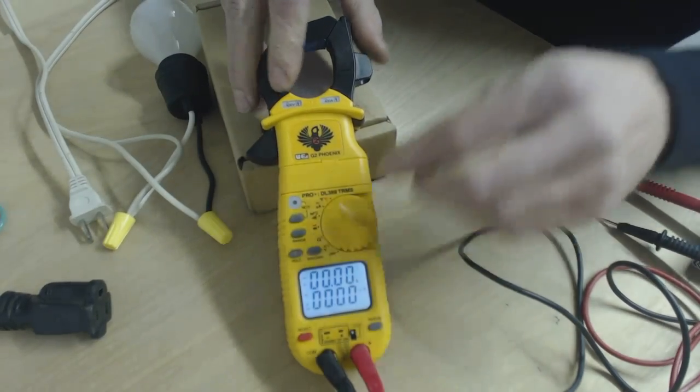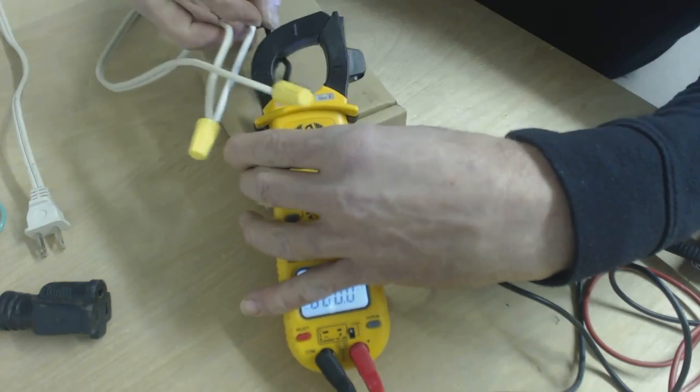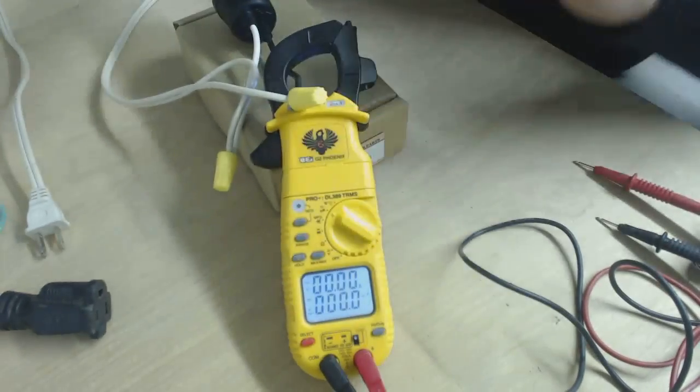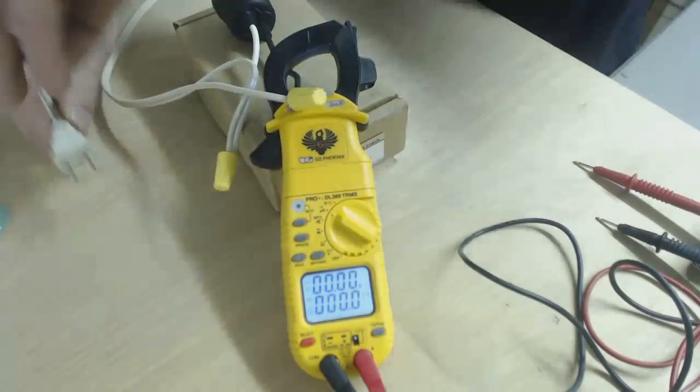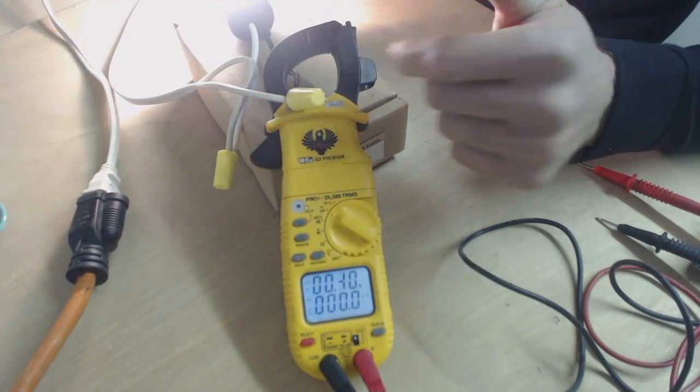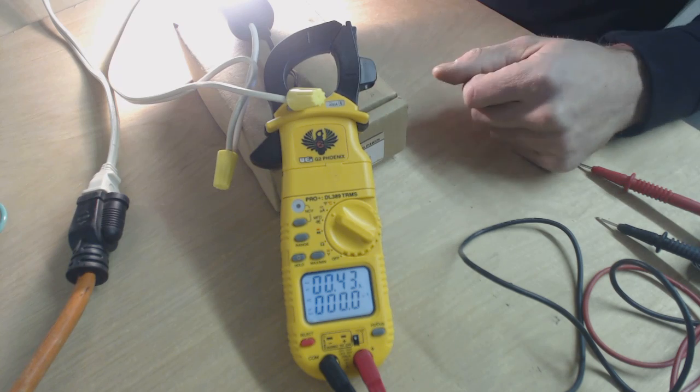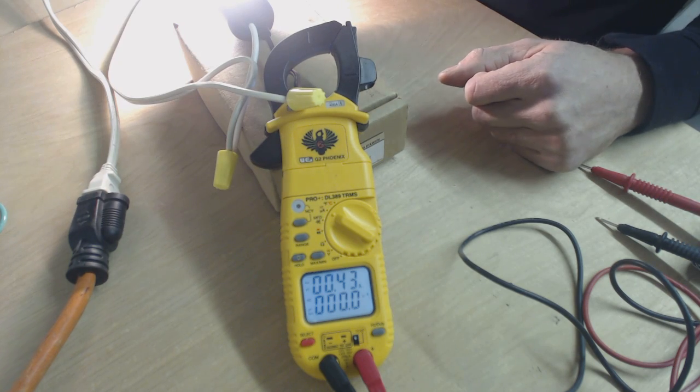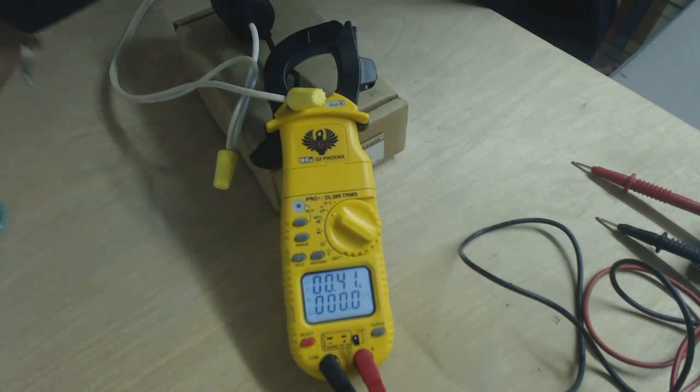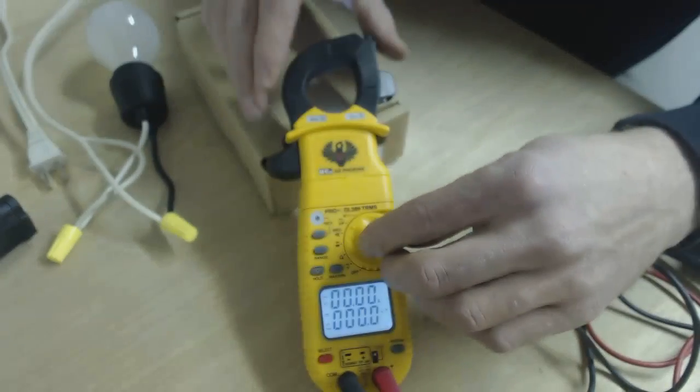Now we're going to turn it to A for amps. You're going to go ahead and put it around the hot wire. You can put it around the hot or the common wire, but it's very important that you see that I put that around that while there was no power going through it for safety. We read .43 amps. So now what I'm going to do is I'm going to turn the light bulb off and then I'm going to go ahead and disconnect the multimeter for safety once again.